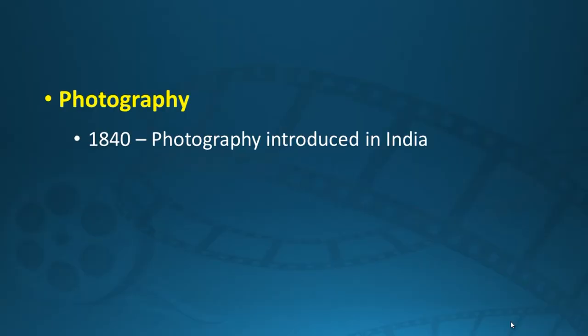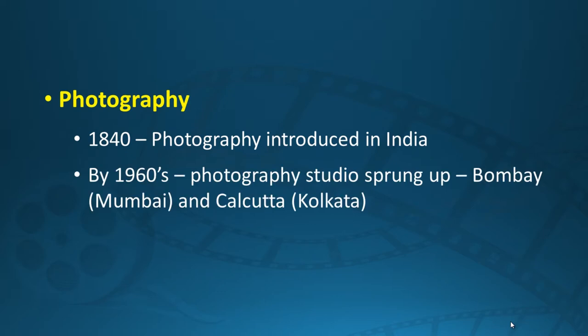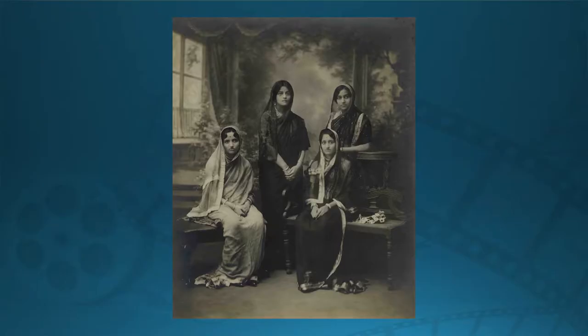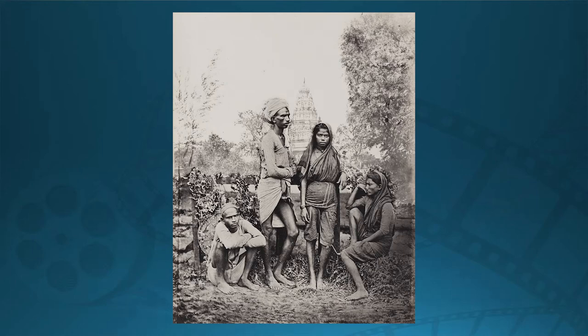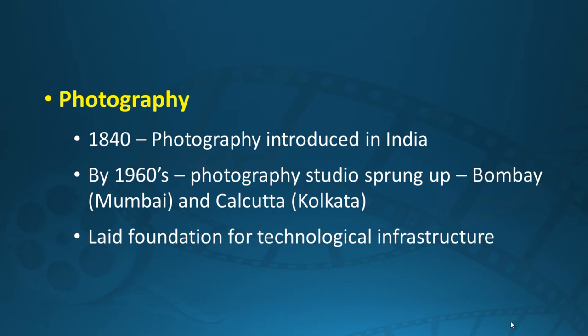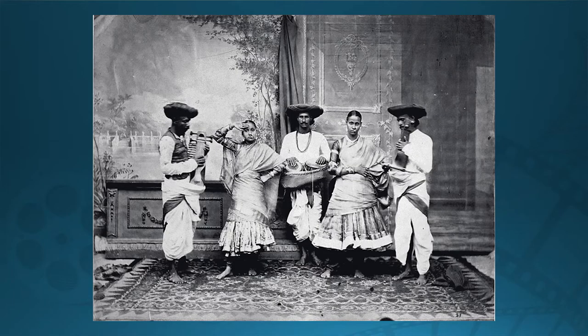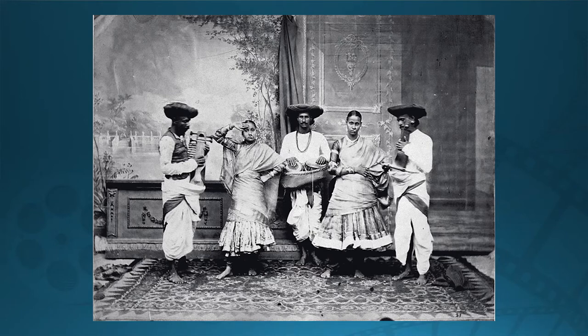Moving on to photography. Photography had come into India in the year 1840, and by the 1860s a lot of photography studios had sprung up in Bombay — today known as Mumbai — and Calcutta, today known as Kolkata. By the 1860s, many people had taken up photography as a profession, and this laid the technological infrastructure that helped cinema to really take off from the very moment it was introduced in India.